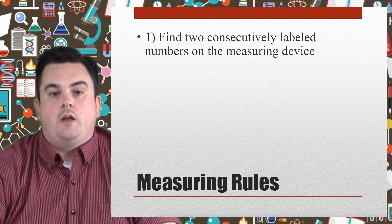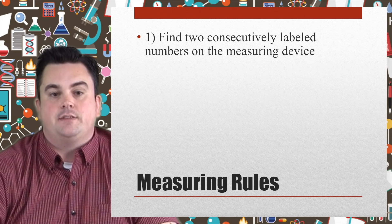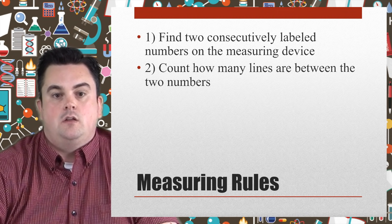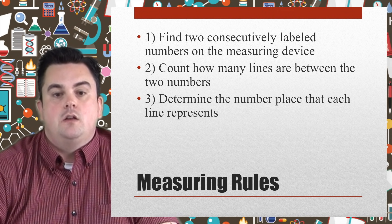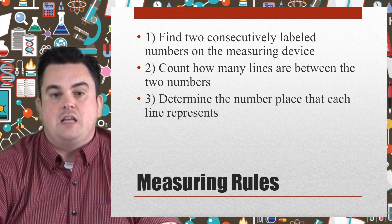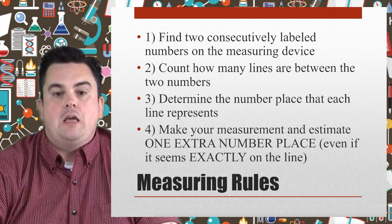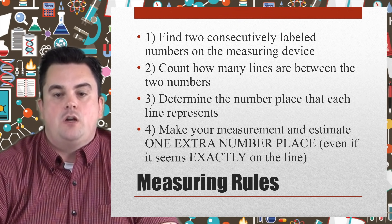Measuring rules. Number one: find two consecutively labeled numbers on the measuring device. Number two: count how many lines are between the two numbers. Number three: determine the number place that each line represents. And finally, number four: make your measurement and estimate one extra number place — one extra number place.